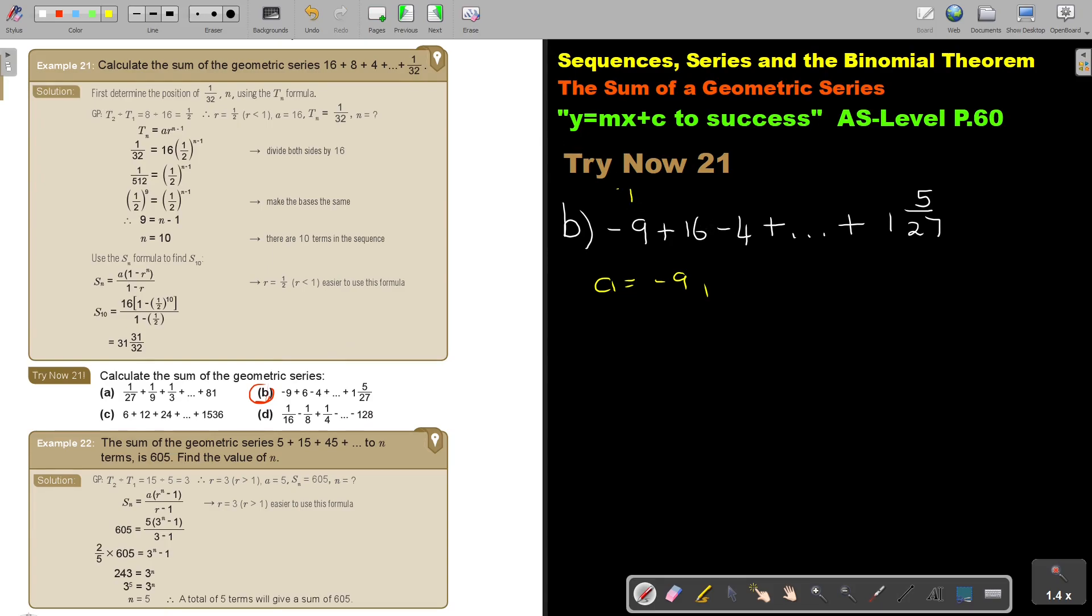Let's just go. This is term 1. This is term 2. I can find the value of R by saying T2 divided T1. So it's 6 divided negative 9. And if I'm going to simplify that, oh, it's not 16, it's just 6. There was a mistake. So it's just going to be 6 divided 9. And then I'm going to divide by 3. So it's going to be negative 2 over 3. That's the value of R. I know that TN is that 1 and 5 over 27.